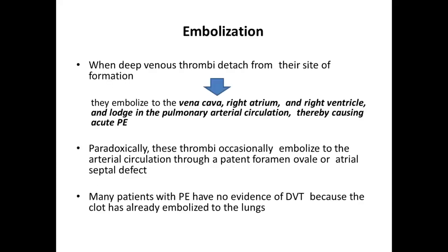When a patient has thrombus formation in the deep vein, that thrombus usually detaches from its site of formation and travels to far distant sites — this is known as embolization. It usually embolizes through the vena cava, right atrium, right ventricle, and into the pulmonary artery circulation, causing acute pulmonary embolism. All thrombi that form in the venous system go into the venous circulation — not the arterial circulation — only into the pulmonary artery.